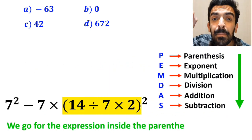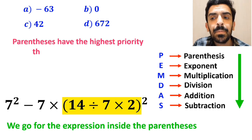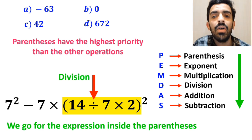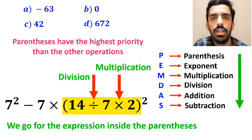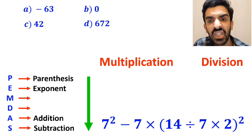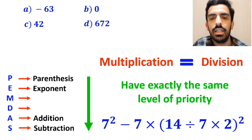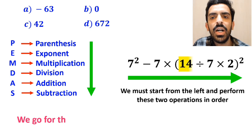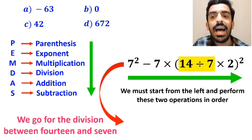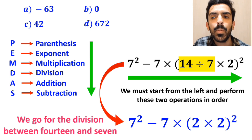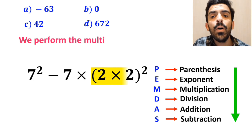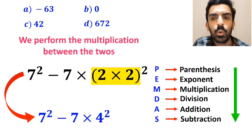First, we go for the expression inside the parenthesis, because parenthesis have the highest priority. Inside the parenthesis, first we have a division sign, and then a multiplication sign. It's very important to note that multiplication and division have exactly the same level of priority. In this situation, we must start from the left and perform these two operations in order. So first we go for the division between 14 and 7, and rewrite this expression as 7 squared minus 7 multiplied by 2 times 2 inside the parenthesis all squared. In the next step, we perform the multiplication between the twos, and this expression simplifies to 7 squared minus 7 multiplied by 4 squared.